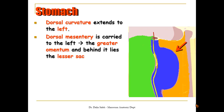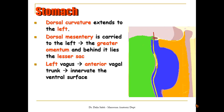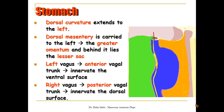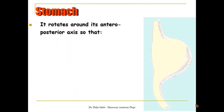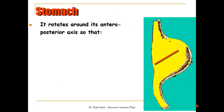The dorsal mesogastrium is carried to the left, forming the greater omentum, with the lesser sac behind it. The left vagus nerve now forms the anterior vagal trunk, innervating the ventral surface of the stomach, while the right vagus nerve forms the posterior vagal trunk, innervating its dorsal surface.